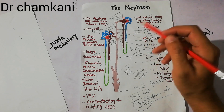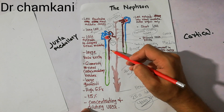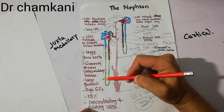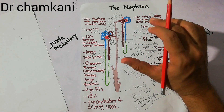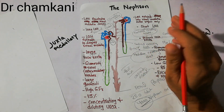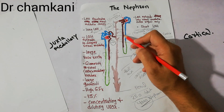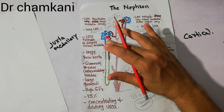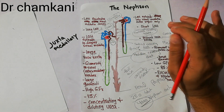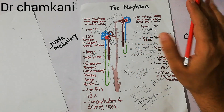Vasa recta is basically a special type of capillary system which surrounds these tubules and penetrates deep in the medulla. The cortical nephrons have a reduced vasa recta, which is a special type of capillary system surrounding the loop of Henle. So juxtamedullary nephrons have a very established and large vasa recta, while the cortical nephrons have a reduced vasa recta.